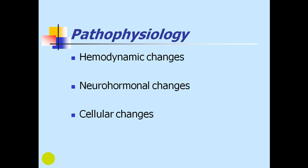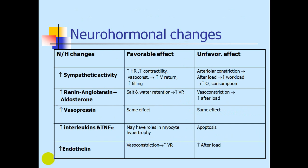In heart failure there are pathophysiological and adaptive mechanisms including hemodynamic changes, neurohumoral changes, and cellular changes. Neurohumoral changes include increased sympathetic activity, renin-angiotensin system (RAS) activation, vasopressin, interleukins, and increased endothelin. These have both favorable effects — increased heart rate, contractility, venous return, and cardiac output — and unfavorable effects such as arteriolar vasoconstriction, increased afterload, workload, and oxygen consumption. The same applies to the renin-angiotensin system, which causes salt and water retention increasing cardiac output but also increasing arteriolar vasoconstriction and afterload.